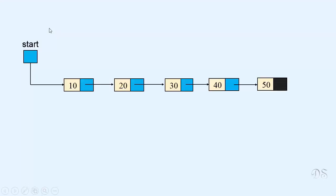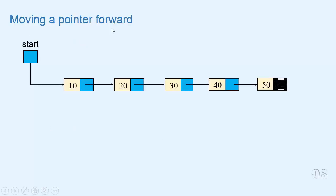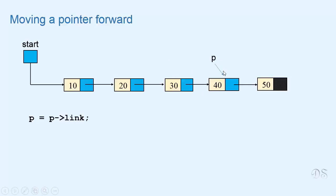In this video we will see how to traverse a linked list. Traversal means visiting each node exactly once, starting from the first node and visiting all nodes till the last. Before seeing traversal, let us see how we can move a pointer forward in the list. Suppose we have a pointer p pointing to a node and we write p = p->link. Since p->link points to the next node, after this assignment p starts pointing to the next node.